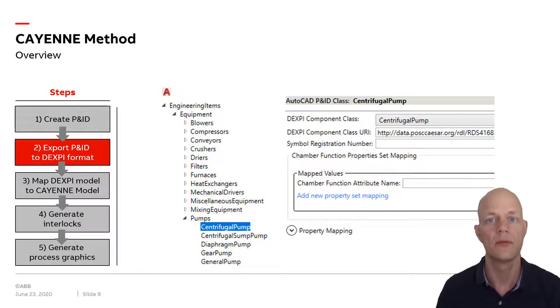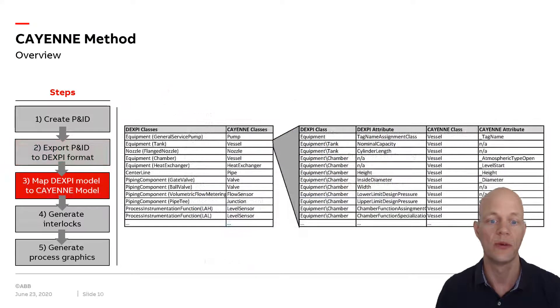In our method, we further process that XML file and map it to our internal CAYENNE model. We do this because the DEXPI model is rather complex with more than 160 different classes. Our CAYENNE model is tailored for our specific use cases and includes far fewer classes.